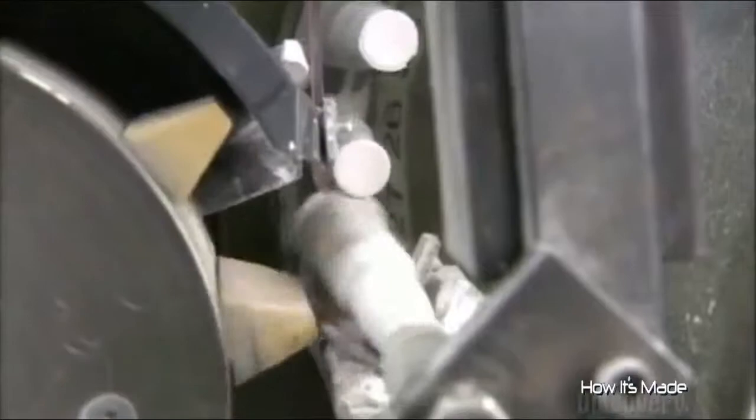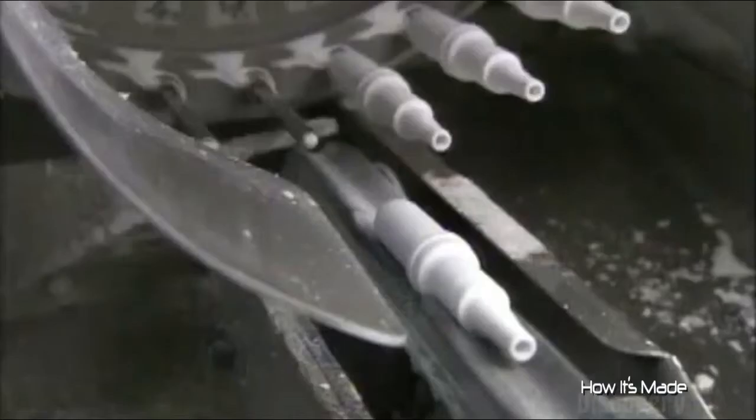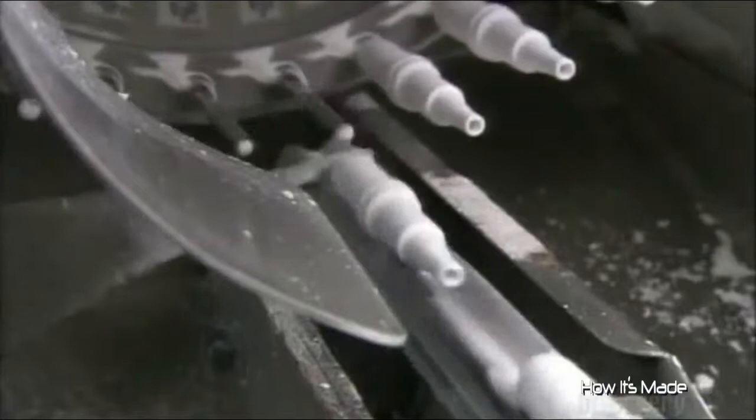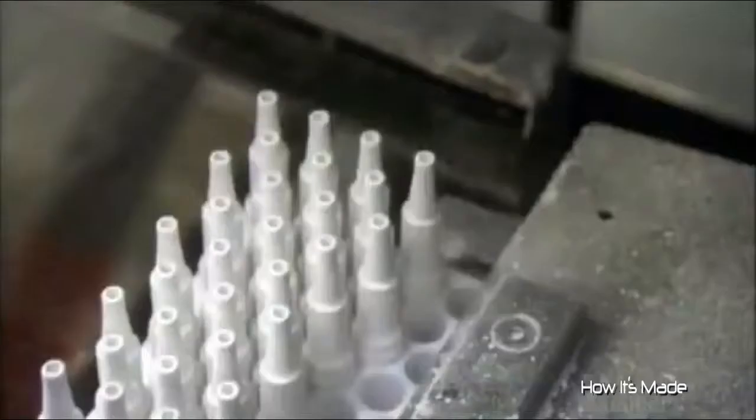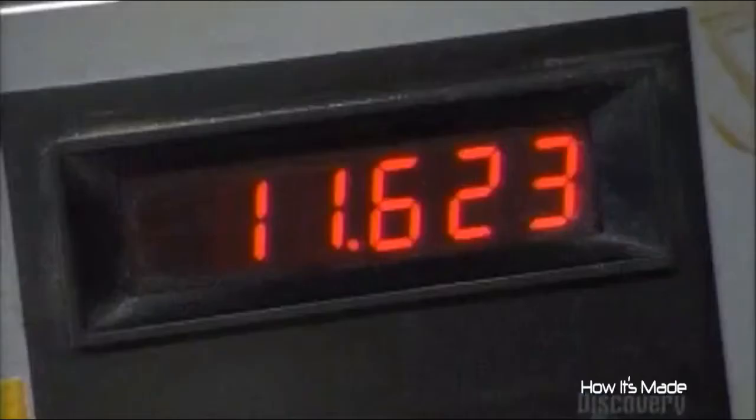An automated system loads them onto mandrels that spin the ceramic insulators against a grinding wheel. It grinds them into a more graduated shape and does a very precise job. These ceramic shapes are quite fragile, and they'll need to be baked in order to harden. But first, a tester double-checks the measurements with a laser tool. Then they bake in this very hot kiln until they're extremely hard. This takes up to 24 hours.